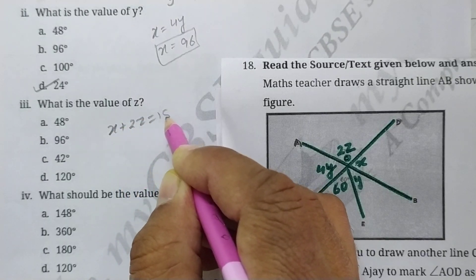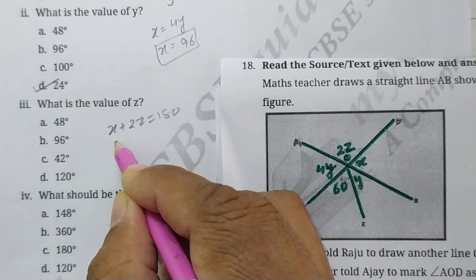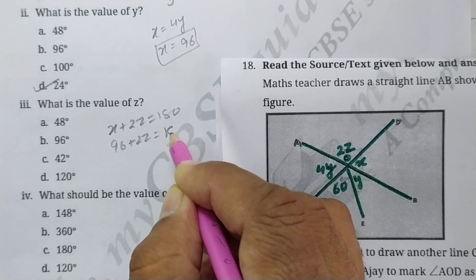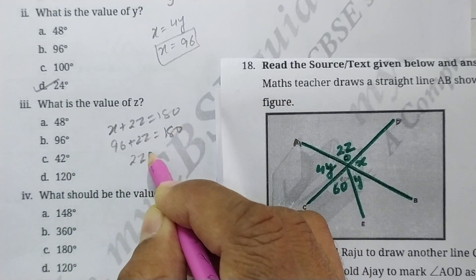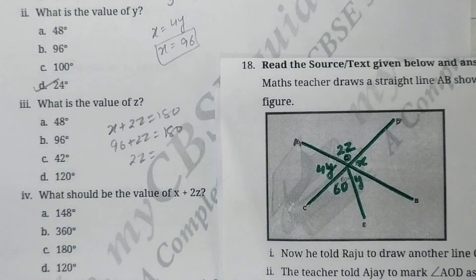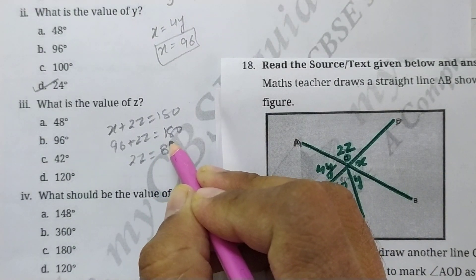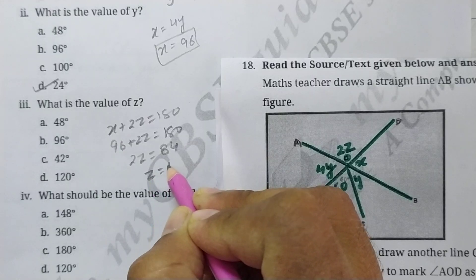So x I have is 96, so 96 plus 2z is 180 degrees. So 2z will be 180 minus 96, which is 84. So z will be 42 degrees. 84 over 2 is 42 degrees, this is the right answer.